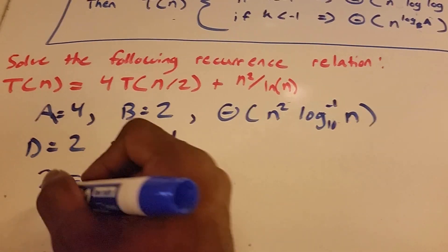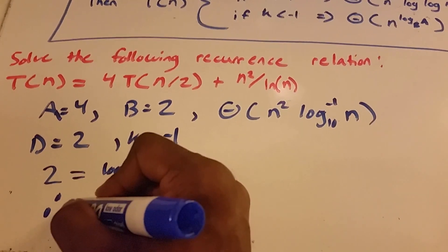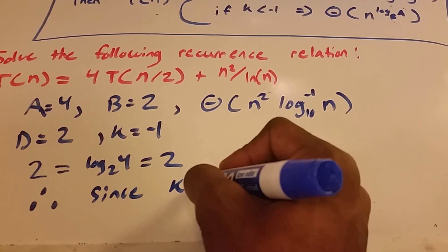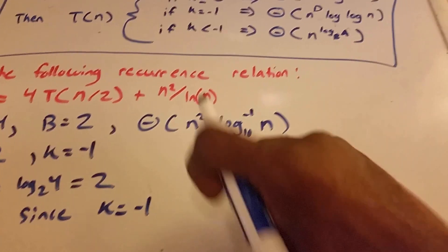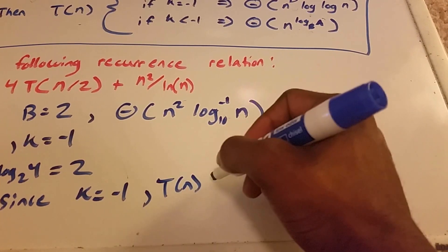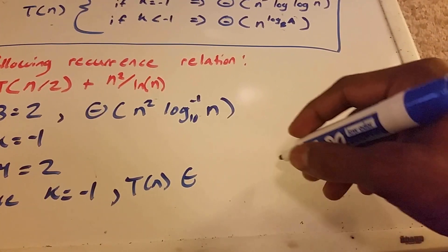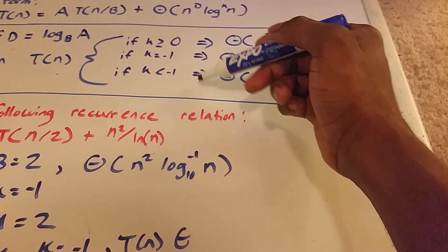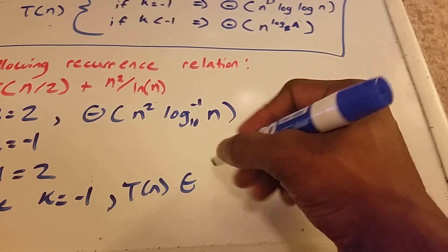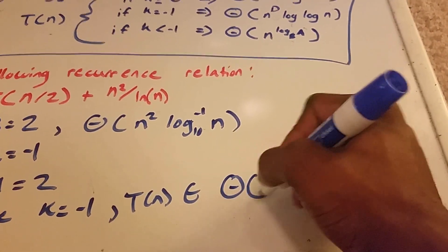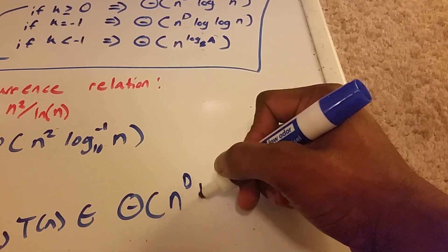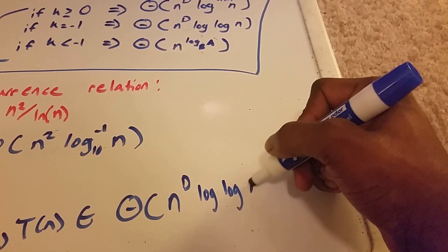So, using the master theorem, therefore, since k is equal to negative 1, T(n) belongs to—and I probably should have put belongs to instead of these arrows here, but that's fine as well. T(n) belongs to big Θ of n^D·log(log(n)).